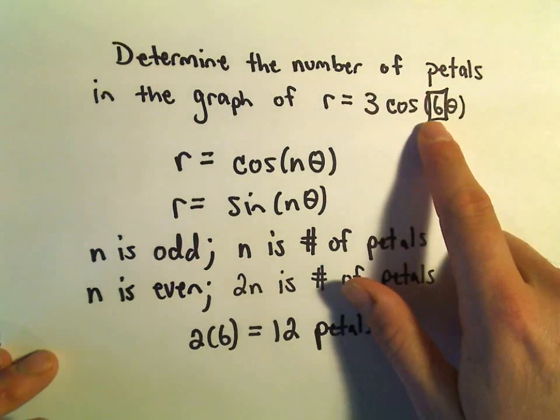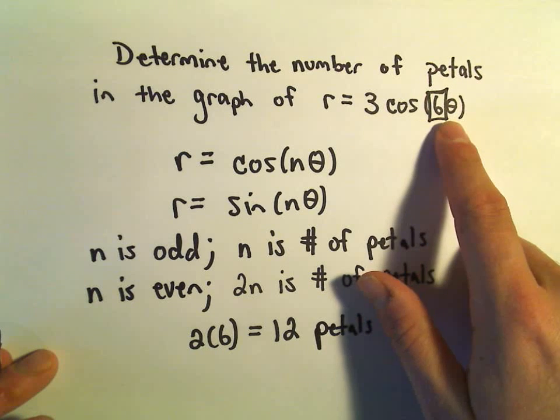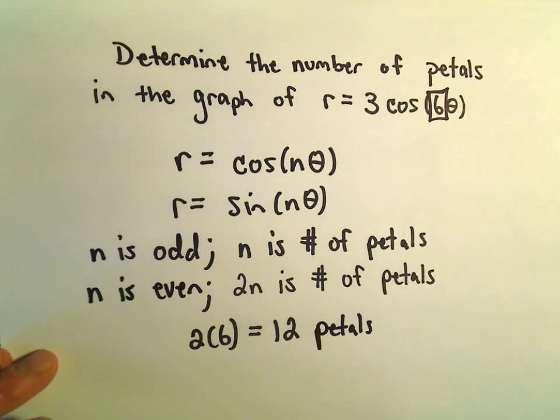Okay, so same thing. If we had cosine of 10 theta, since 10 is even, we would have 20 petals.